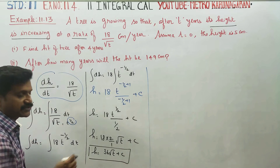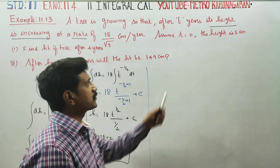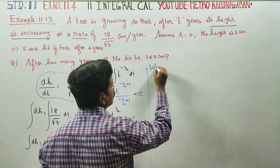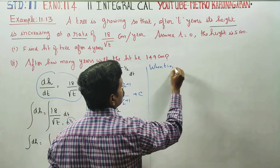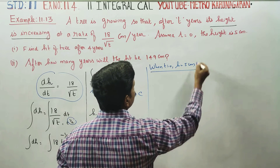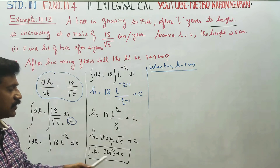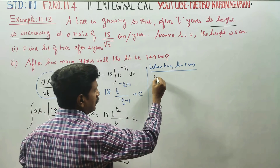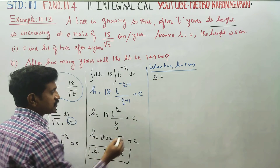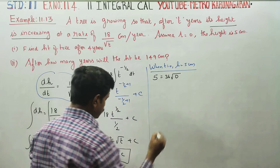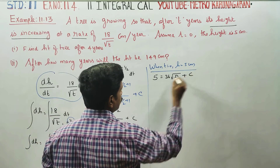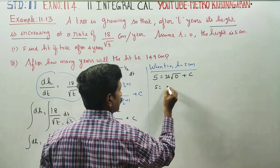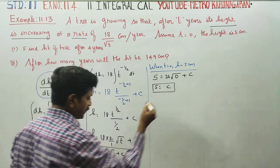This is the height equation. The next information: when t is equal to 0, height is equal to 5 cm. Substituting t equal to 0 gives h equal to 5, so c equal to 5.